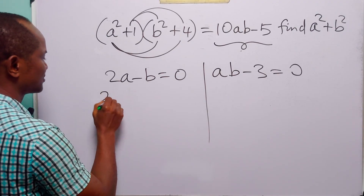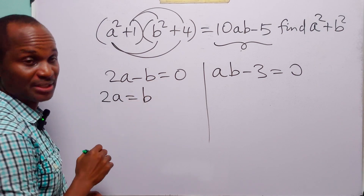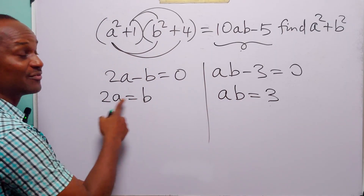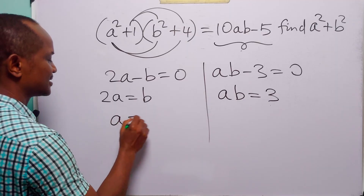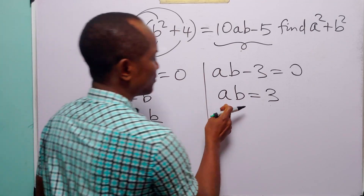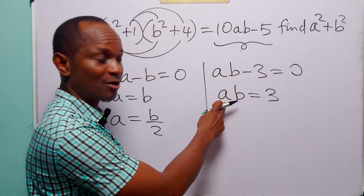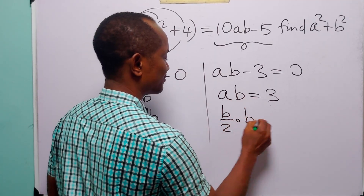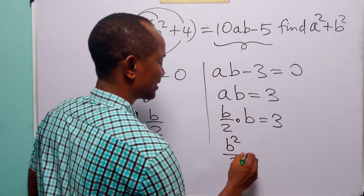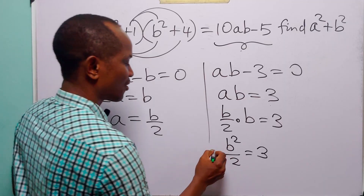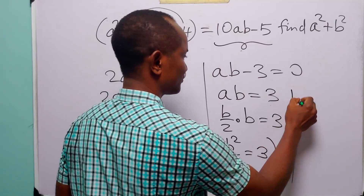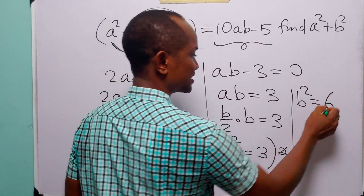From the first equation we have that 2a equals b, and from the second equation ab equals 3. When we divide both sides of the first equation by 2, we get a equals b over 2. Substituting b over 2 for a in the second equation, we have (b over 2) multiplied by b equals 3. Of course, b times b is b squared divided by 2, so b squared over 2 equals 3. Multiplying both sides by 2, we get b squared equals 6.